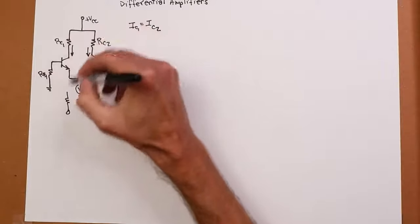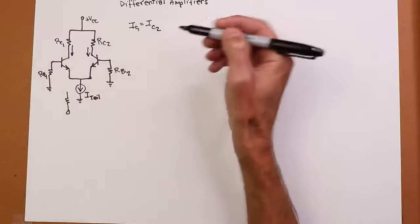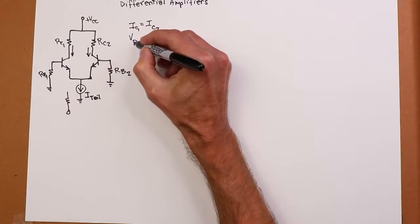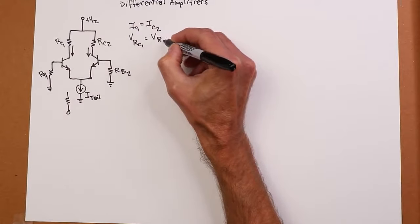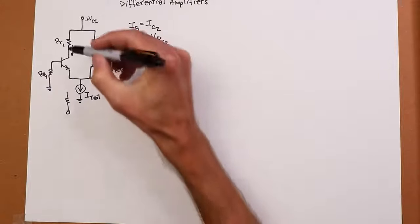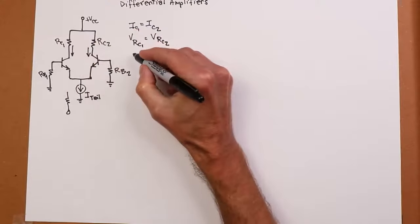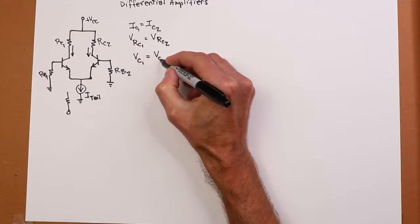like the drop across RC1, is the same as the drop across RC2. That's just Ohm's law. And of course, if those two resistors are identical, then it should be the case that the voltage at collector 1 is equal to the voltage at collector 2.